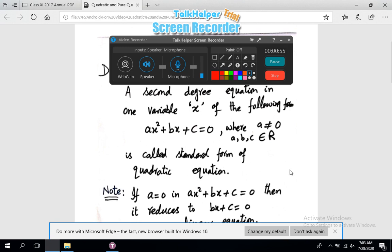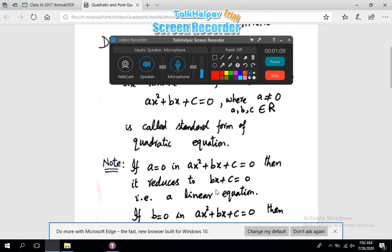We see now what happens if a = 0. If a = 0 in ax² + bx + c = 0, then it reduces to bx + c = 0. Viewers, this form is called linear form of equation.